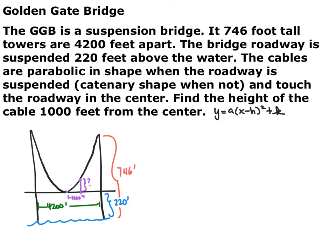The last modeling problem is the Golden Gate Bridge. It has 746-foot-tall towers that are 4,200 feet apart, the roadway is 220 feet above the water, and the cables start at the top of the towers, touch the roadway in the middle, and are parabolic in shape. We want to find the height of the cable off the roadway when it's 1,000 feet away from the center. I've put it on a picture, and we're going to use a parabola equation to model this situation. I'll place the origin right at the vertex to simplify things.